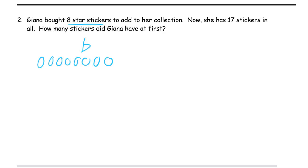And she has 17 in all. So these are the ones that she bought — that's eight. And she has more, right? But she has a total of 17. Seventeen is the whole. So we have to find out how much more we have to add here to have 17 in all.